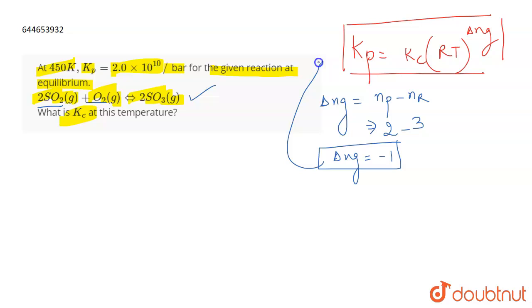If we put this value in the expression, for this reaction it becomes Kp = Kc(RT)^-1. We have the value of Kp and need to find Kc. So this becomes Kp × RT = Kc.